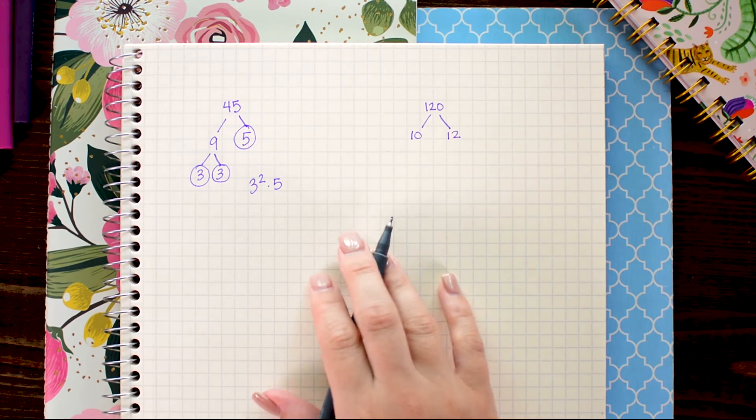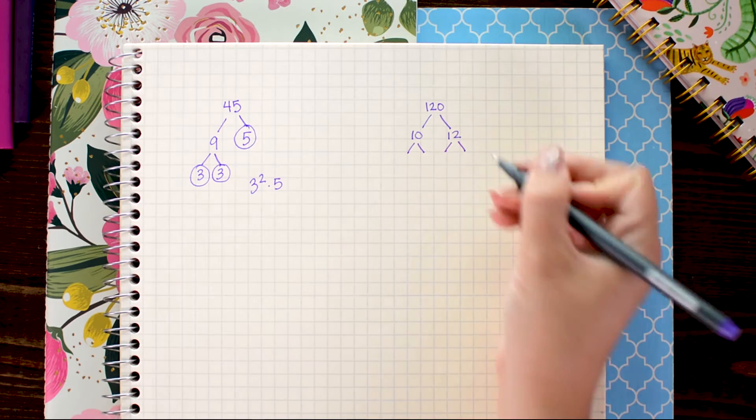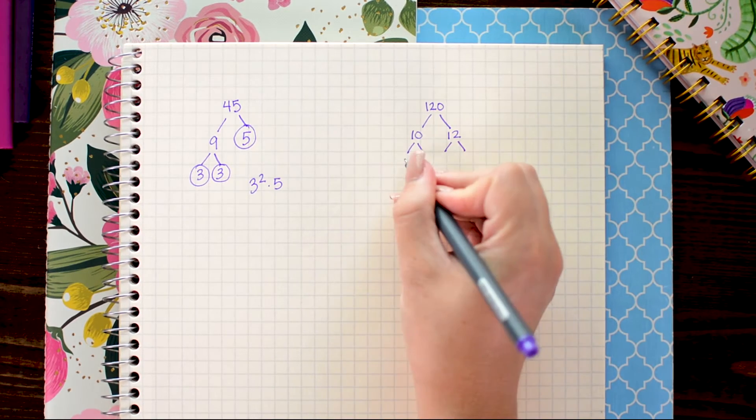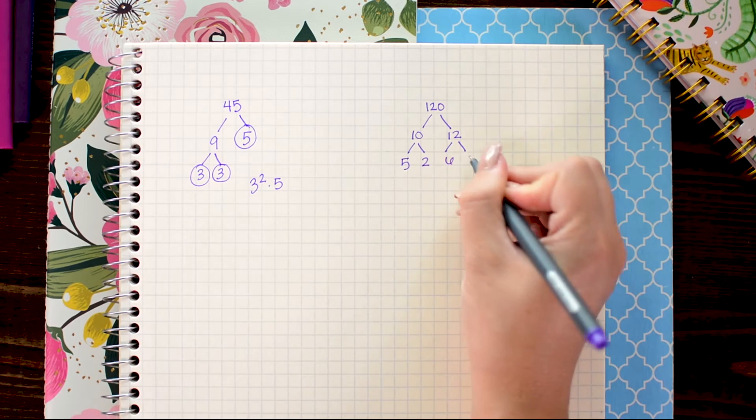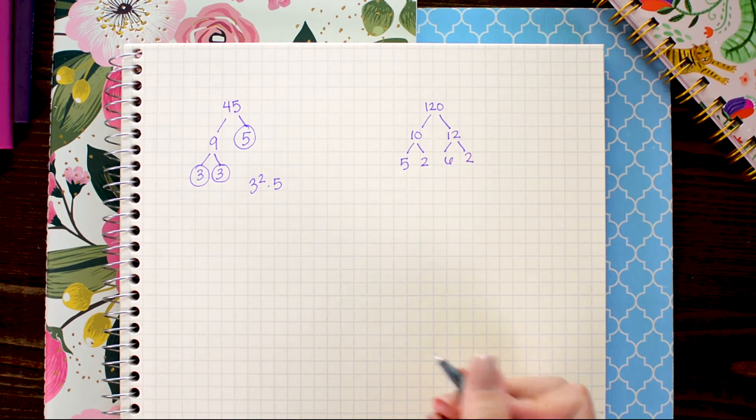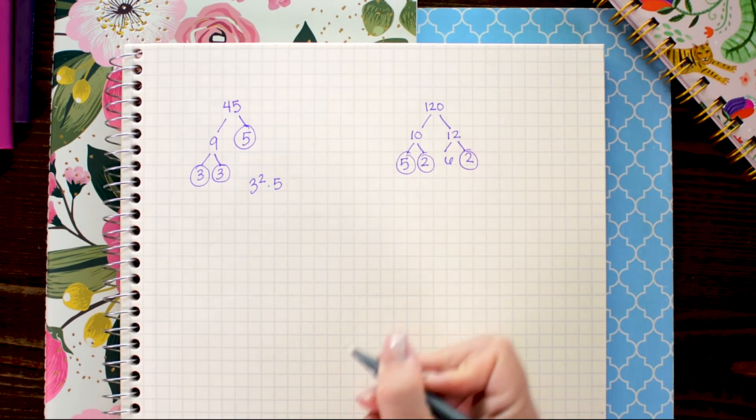Both of those are composite numbers so two more branches on each. 5 times 2 equals 10 and 6 times 2 equals 12. The 5 and the 2's are prime so those branches are done.